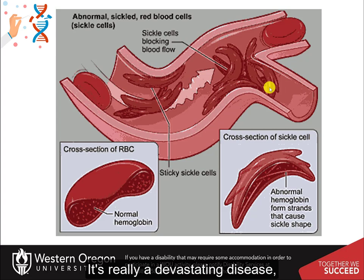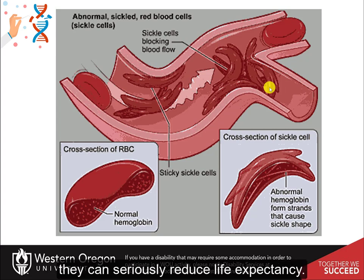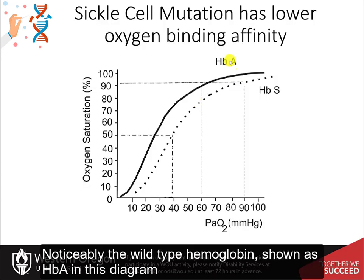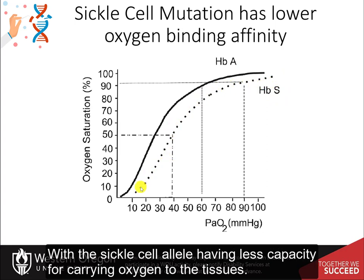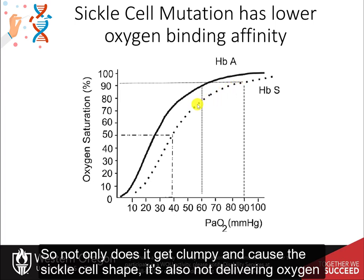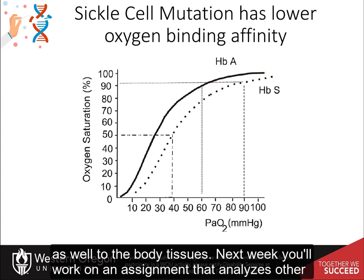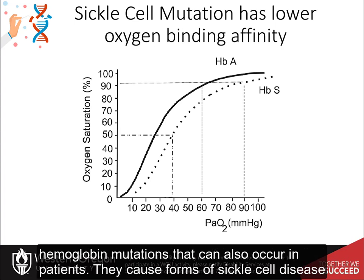Sickle cell anemia is a devastating disease that can seriously reduce life expectancy. The wild-type hemoglobin (HbA) and the sickle cell allele (HbS) have different binding affinities for oxygen, with the sickle cell allele having less capacity for carrying oxygen to tissues. So not only does the clumping cause the sickle shape, but the protein is also not delivering oxygen as well to body tissues. Next, you will work on an assignment analyzing other hemoglobin mutations that can also cause forms of sickle cell disease.